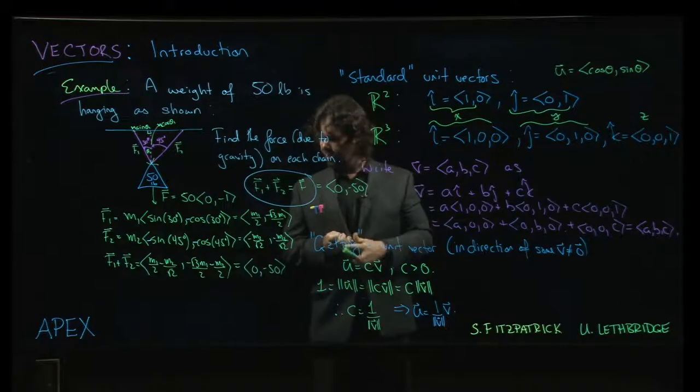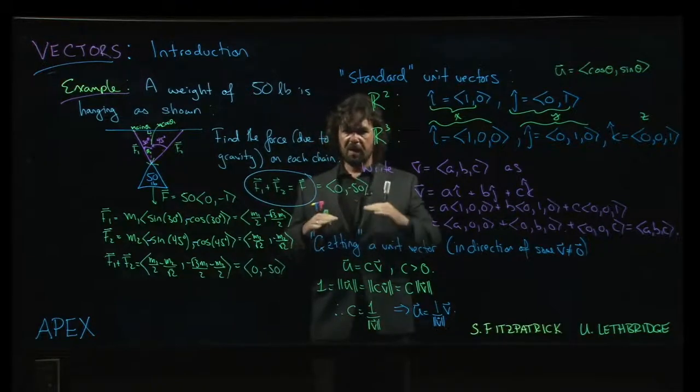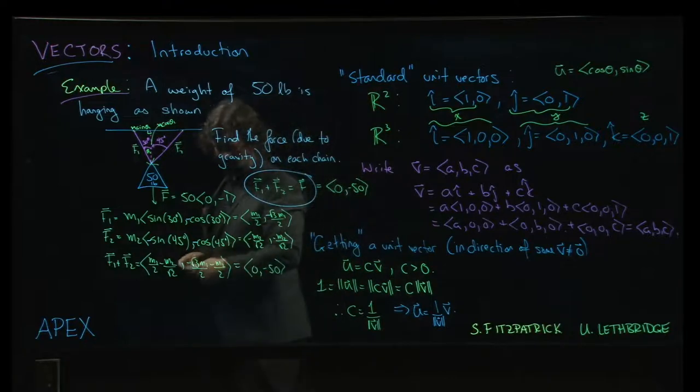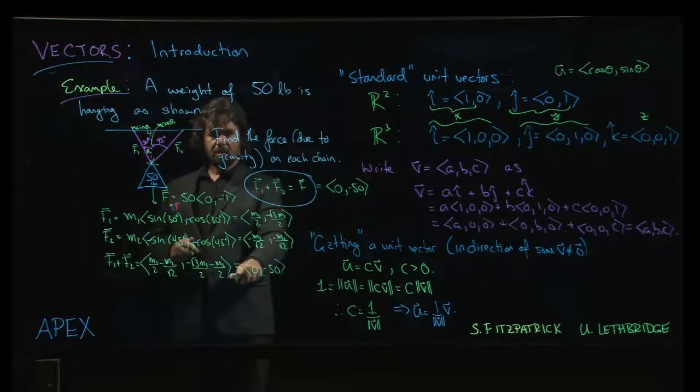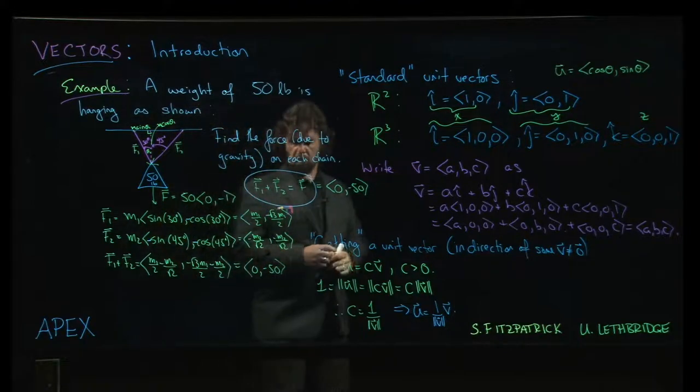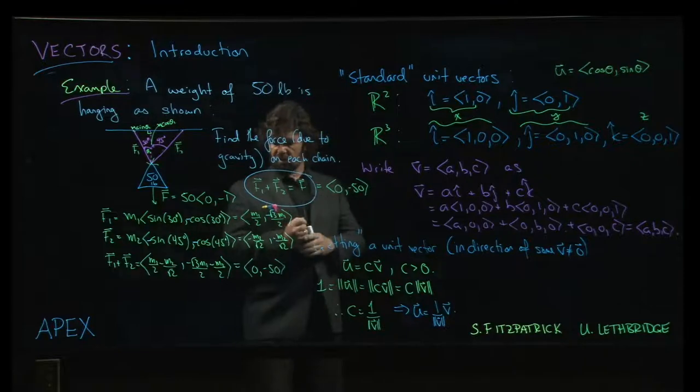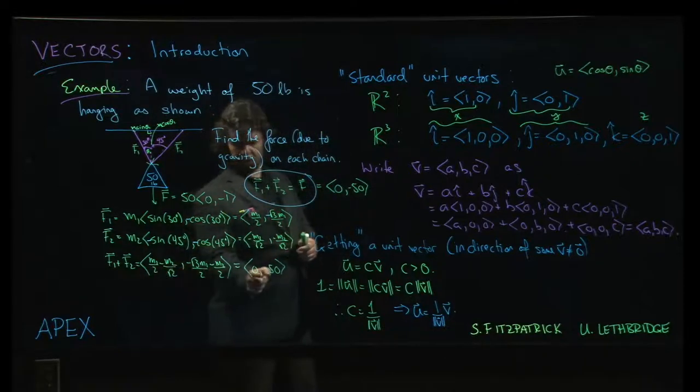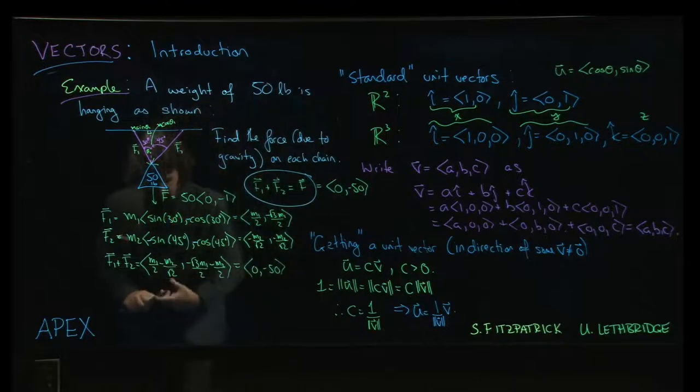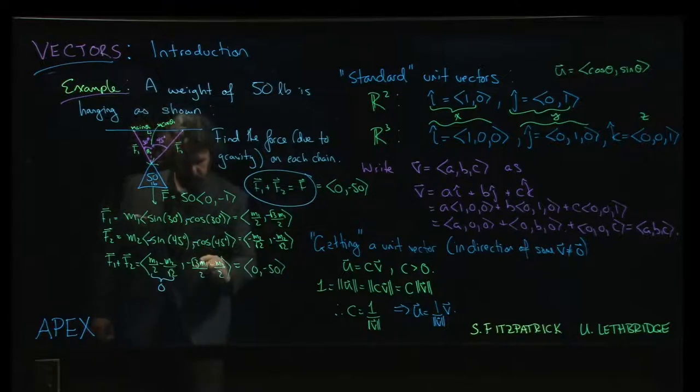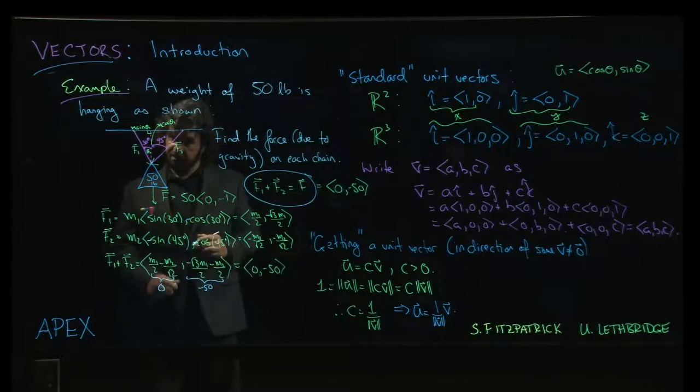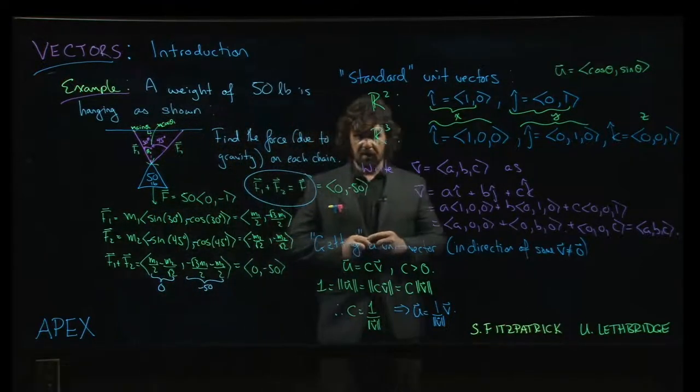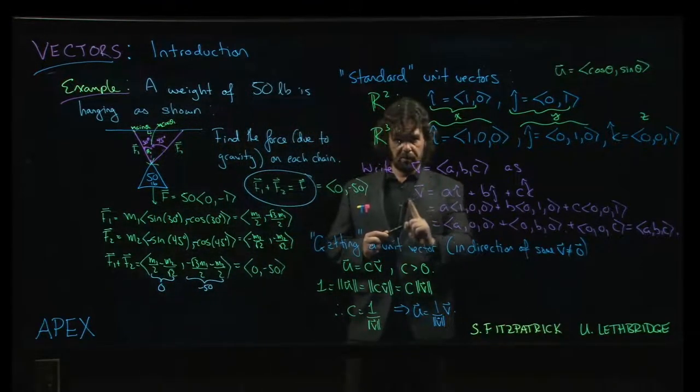All right, so now we can actually pause for a second, and there's something that, you know, a very basic elemental thing that we probably should have addressed at the very beginning, and I don't think we talked about. What does equals mean when you're talking about vectors? What does it mean for two vectors to be equal? Well, two vectors are equal if and only if their corresponding components are equal. So this M1 over 2 minus M2 over root 2, that has to be equal to 0. This has to be equal to negative 50.